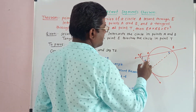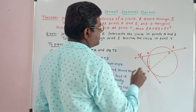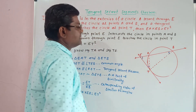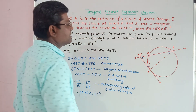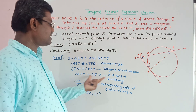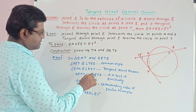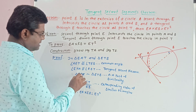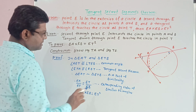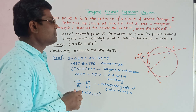In the two triangles, angle E is common and angles ETA and EBT are congruent. Therefore the two triangles are similar by the AA test. Taking the ratio of corresponding sides: EA/ET = ET/EB. Cross multiplication gives EA × EB = ET × ET = ET². This is called the tangent-secant segment theorem.